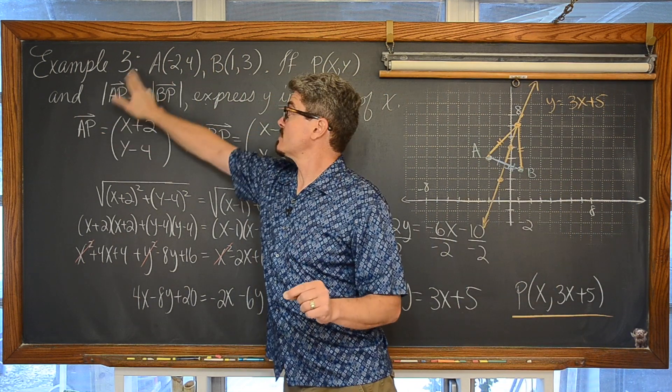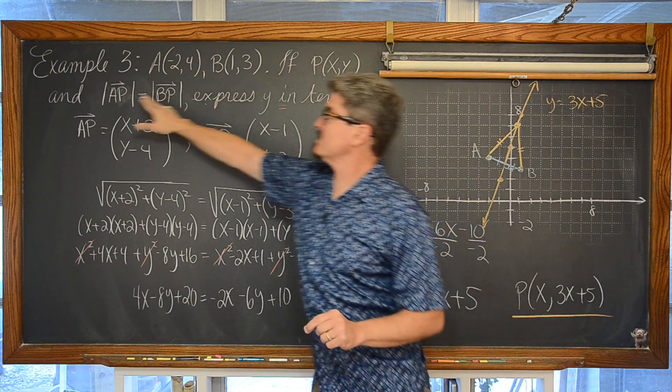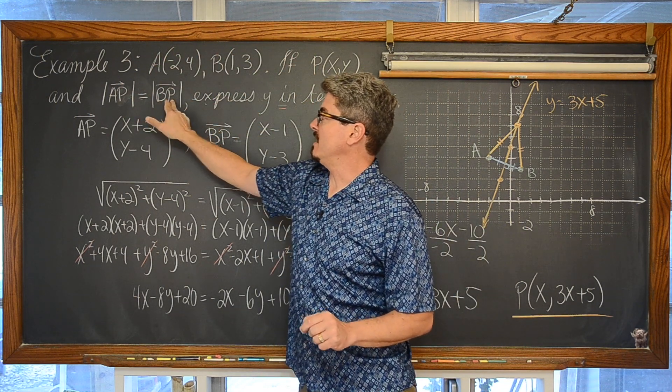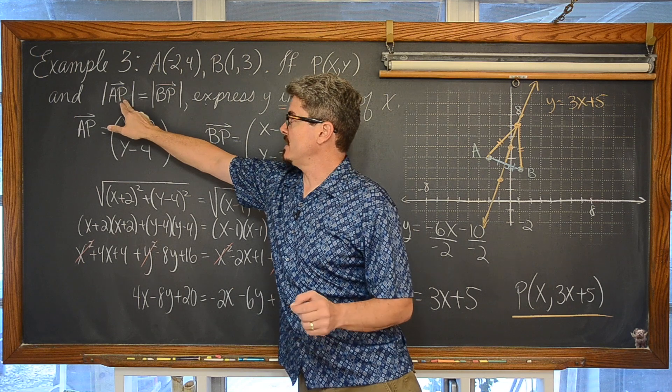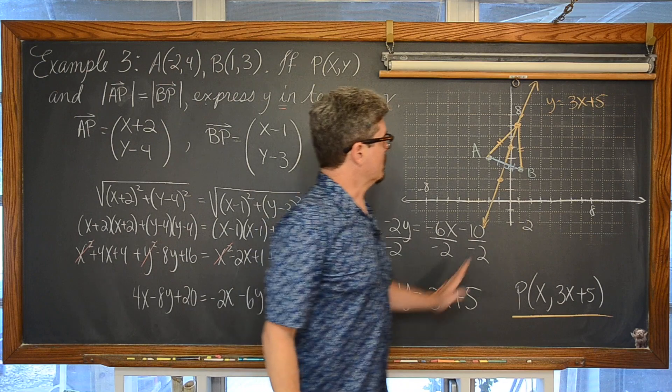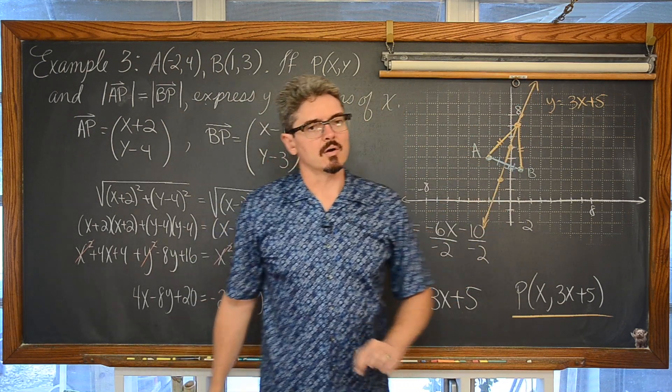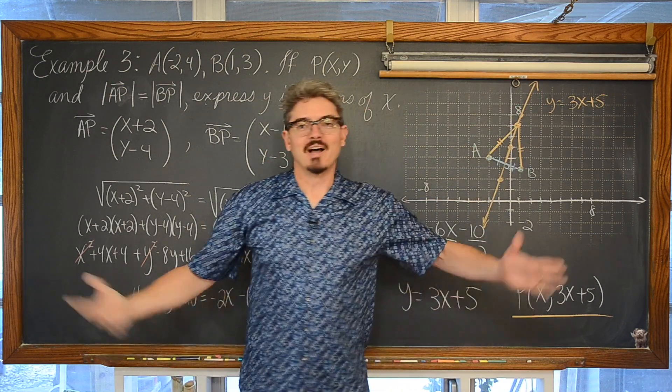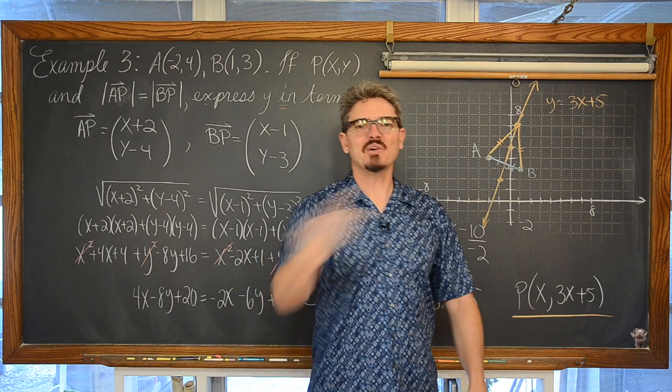Point A, point B, set up vectors from A to P, vector AP, and vector BP going from endpoint to this unknown, endpoint to this unknown, where that unknown is forming or consists of all the points along that perpendicular bisector. I am Mr. Tarrou. BAM! Go do your homework!